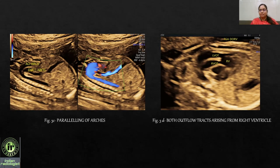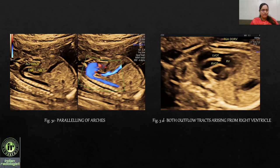Double outlet right ventricle has four types depending on where the blood vessels arise. The important features to assess are the relation of the great vessels, the position of the VSD, presence or absence of pulmonary stenosis, and absence of mitro-aortic and mitro-pulmonary continuity. DORV is important because it is associated with trisomy 18 and 13. The four types are: DORV with subaortic VSD, DORV with sub-pulmonic VSD, doubly committed VSD, and remote VSD.